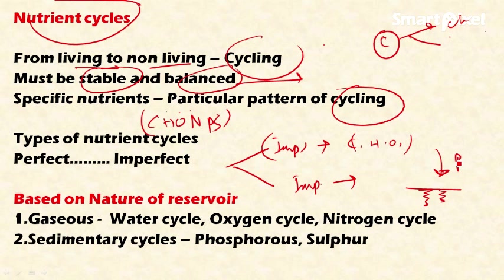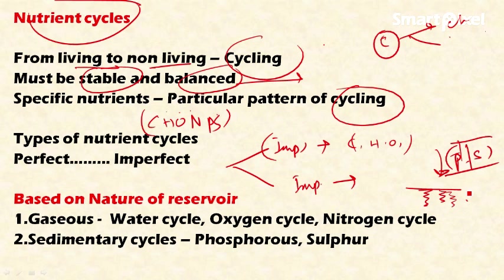In an imperfect cycle, nutrients do not complete a perfect cycle. While interacting with biotic and abiotic components, some nutrients become fixed or accumulated in the earth's crust as sedimentary deposits and are not available for further cycling. Examples are phosphorus and sulfur, which are fixed below the ocean and earth's crust and become available again only after millions of years through geomorphological processes.